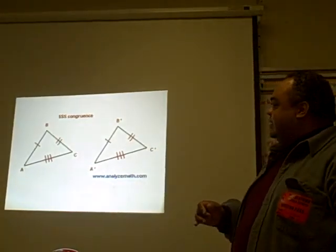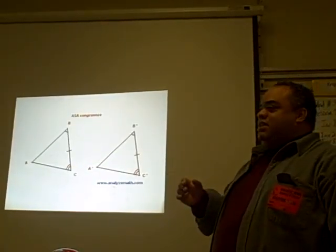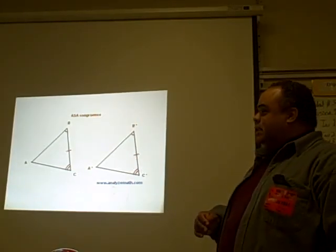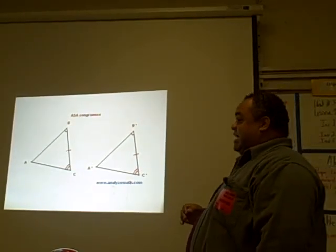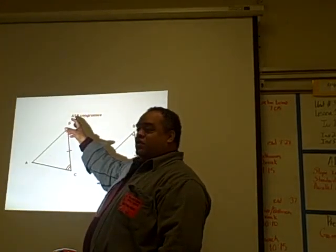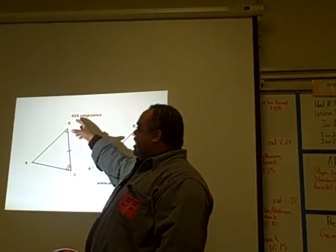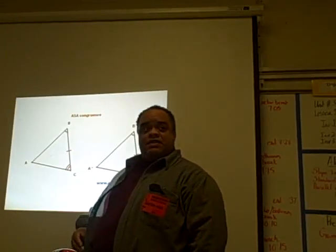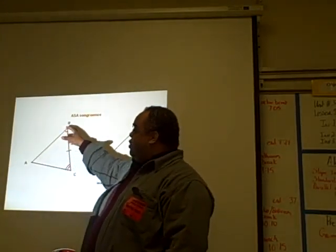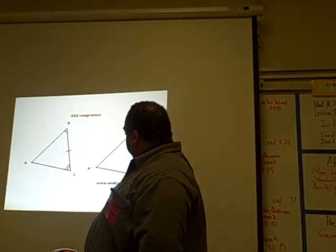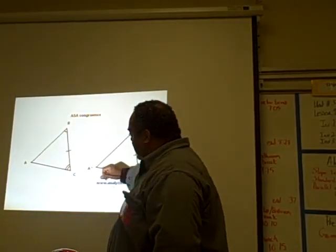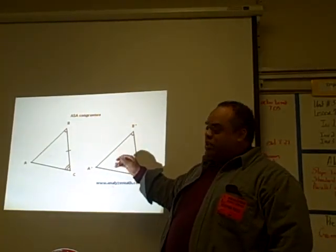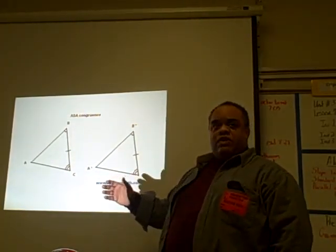ASA is angle, side, angle. So what does that mean? You have two angles, and the side has to be in the middle of those two angles — it has to be in that order. So you have two angles that are congruent, and the side in the middle of the two angles is congruent, which makes the triangles congruent.